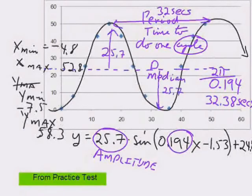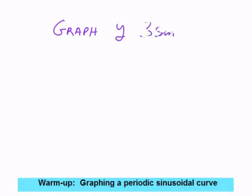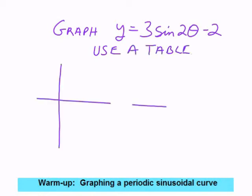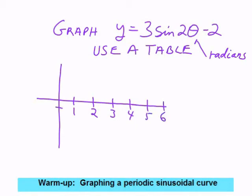This pretty much completes all the notes — three more weeks to go. Let's graph this function: obviously it's in radians because there's no degree symbol. So the x-axis is in radians. One radian, two radians, three radians, four — you know a radian is about 60°. Let's do a table. When the angle is 0: sine of 0 = 0, 3 × 0 = 0, minus 2 = −2.